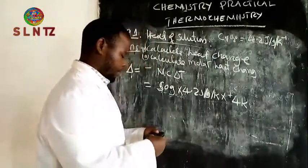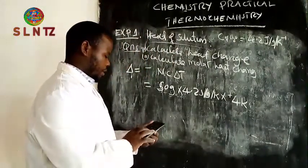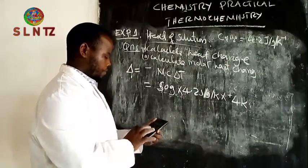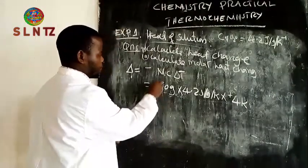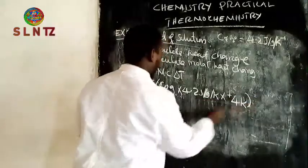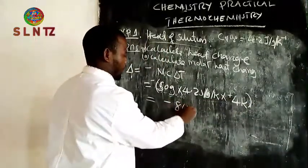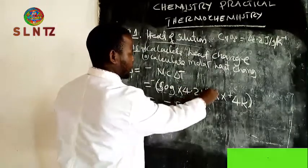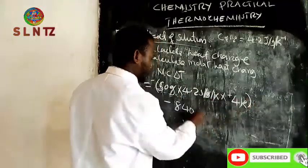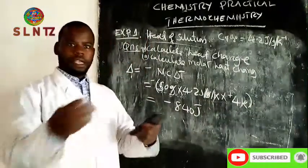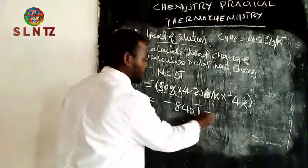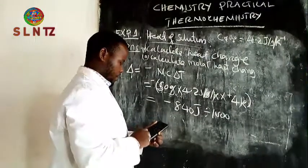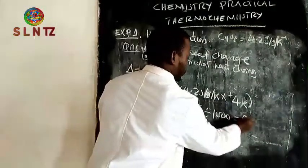When you calculate, it means 50 times 4.2 times the temperature change. The result will be negative because the temperature change is negative. You can decide to express it in kilojoules by dividing by 1000. The result is 0.84 joules.